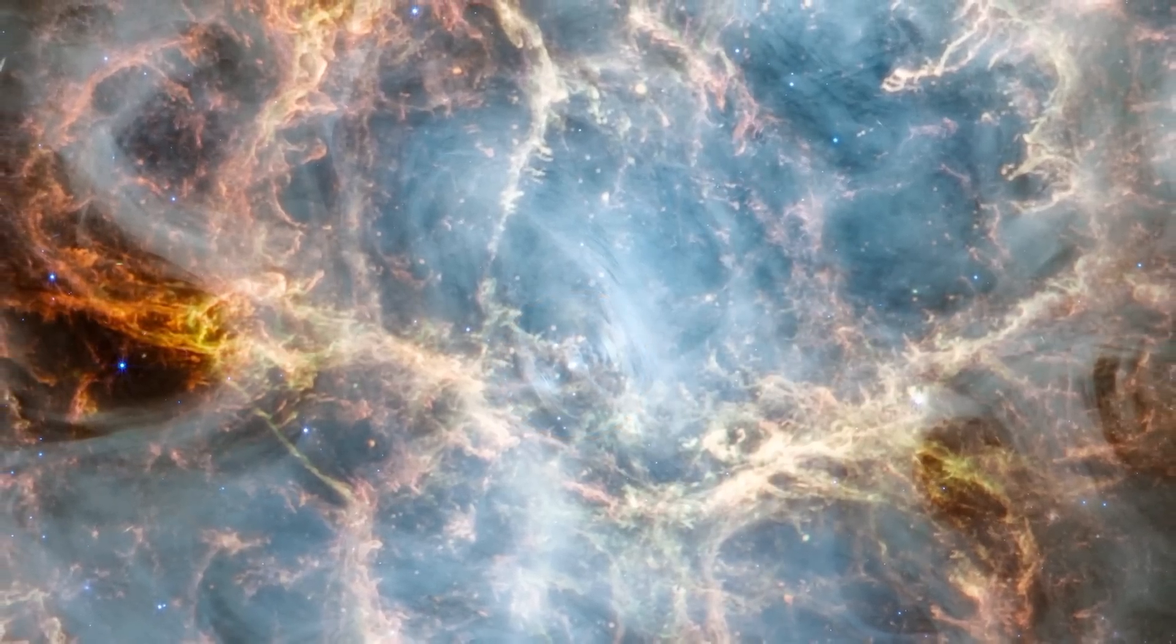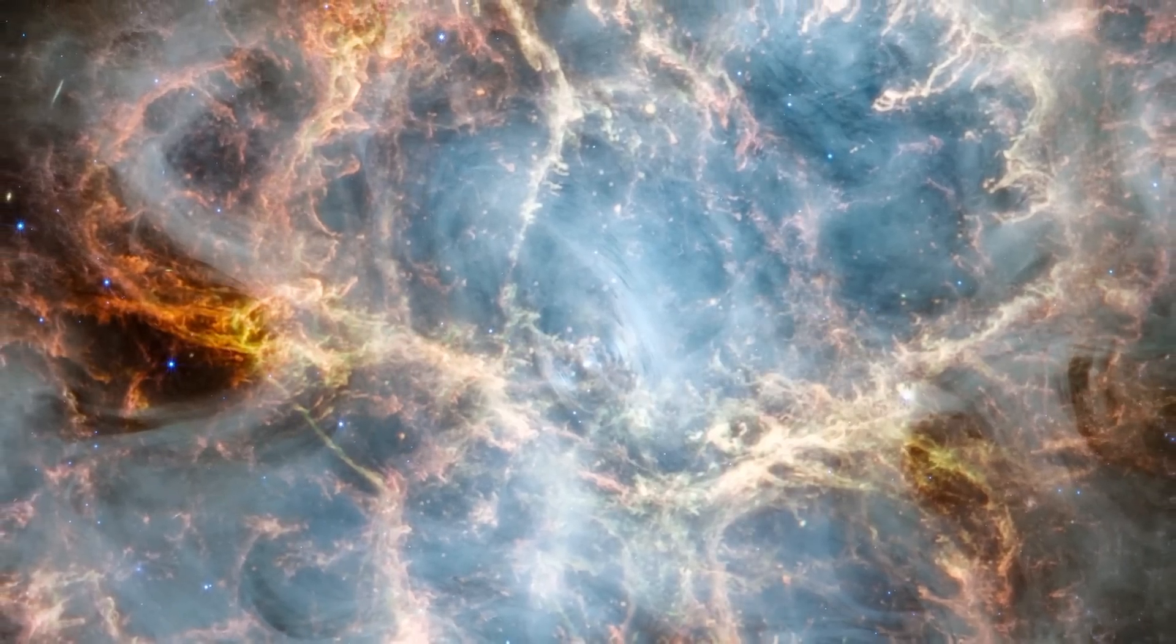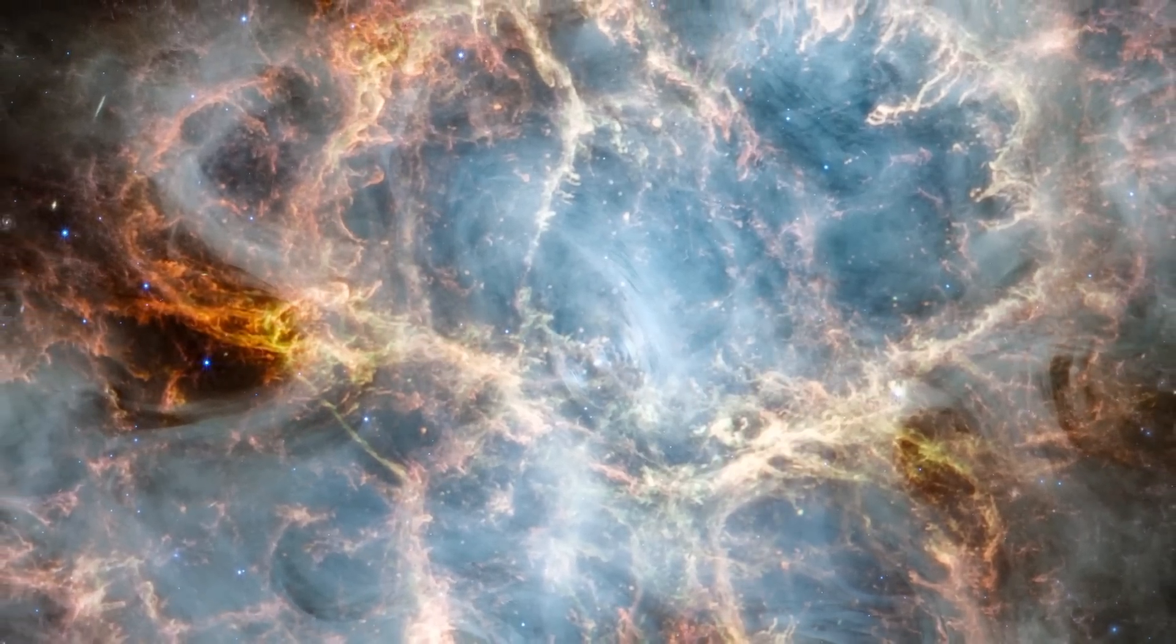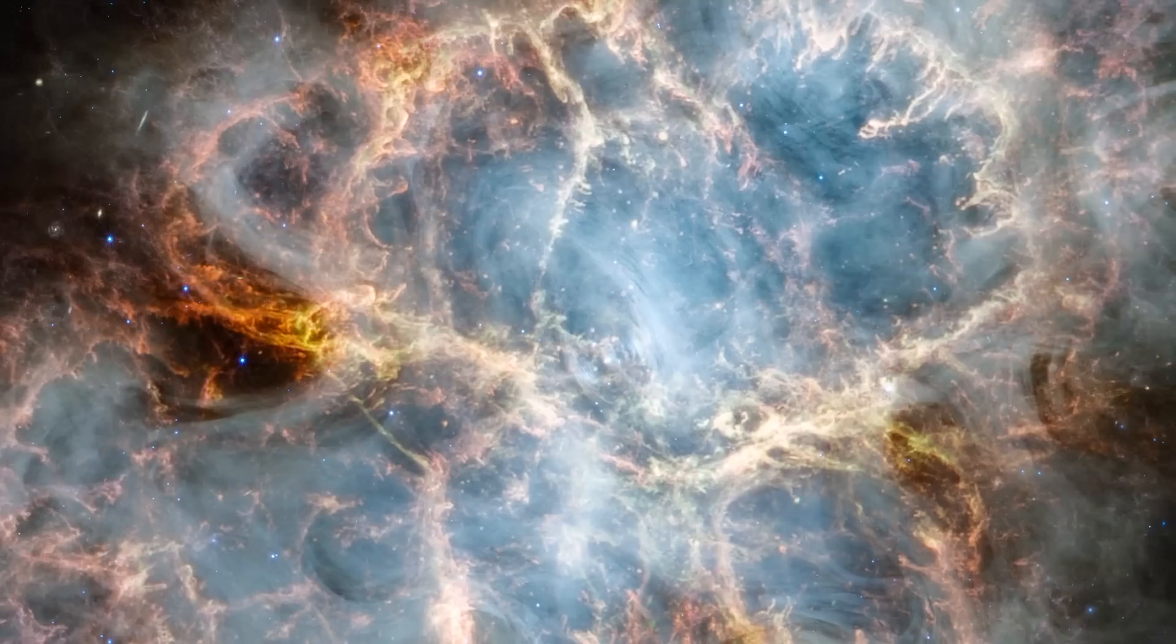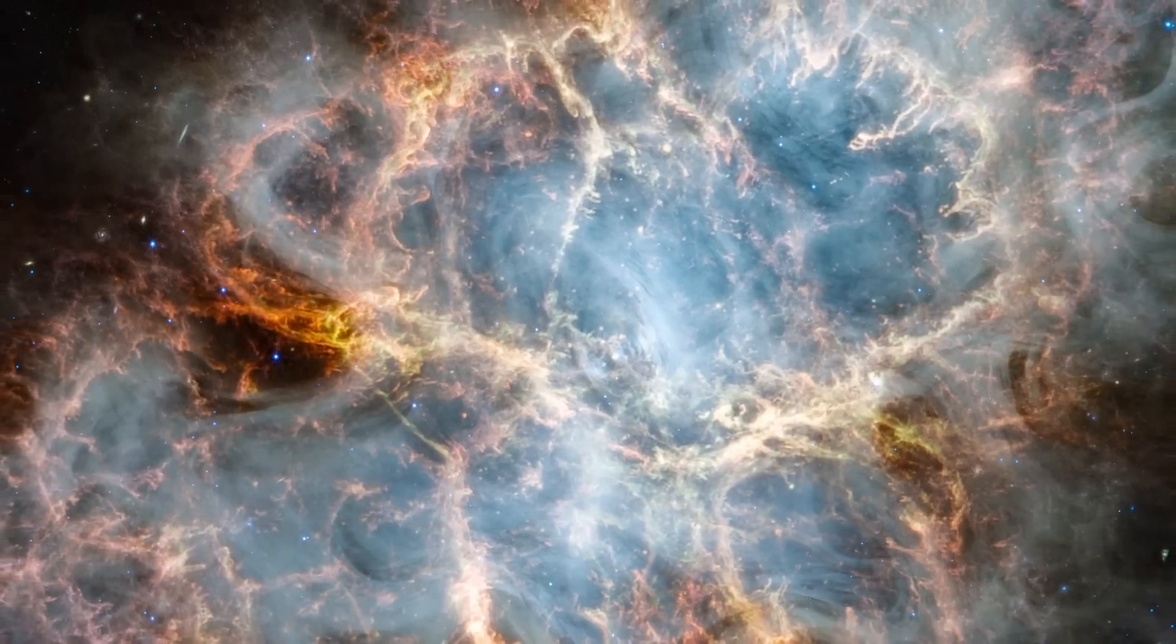The Crab Nebula is made up of many components, including ionized sulfur, seen here in red-orange, dust in yellow-green, and synchrotron emission in a milky white.